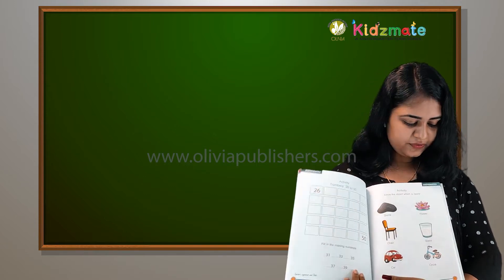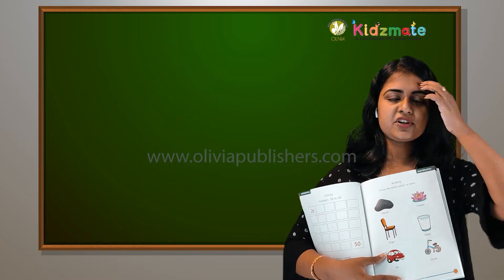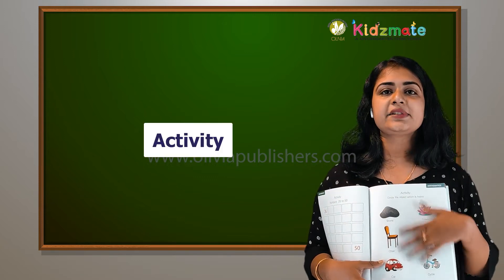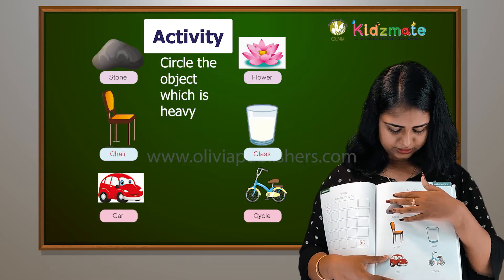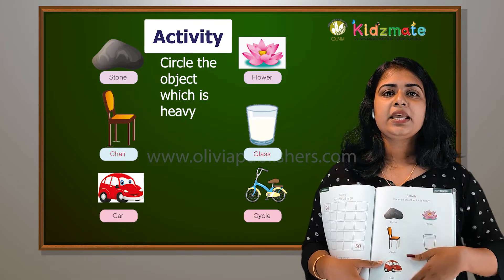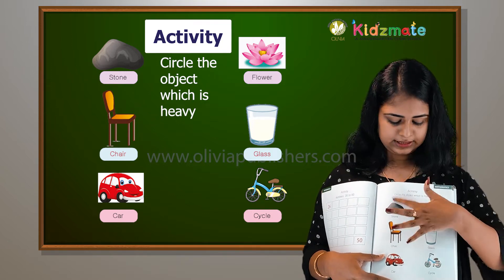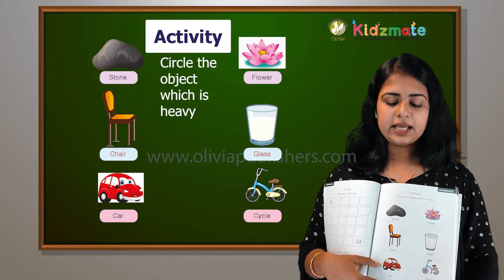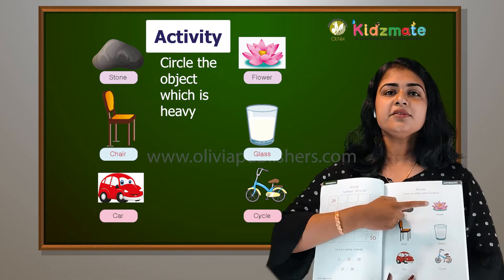All of you turn to page number 45. You have an activity here. You circle the object which is heavy. You have to circle the heavy object from this — stone, flower.